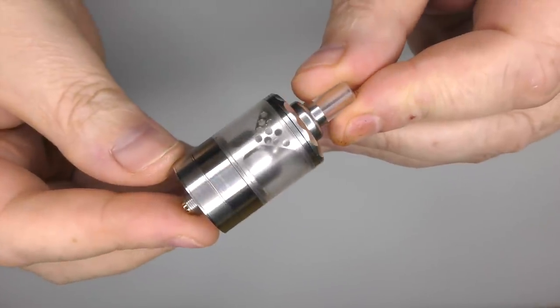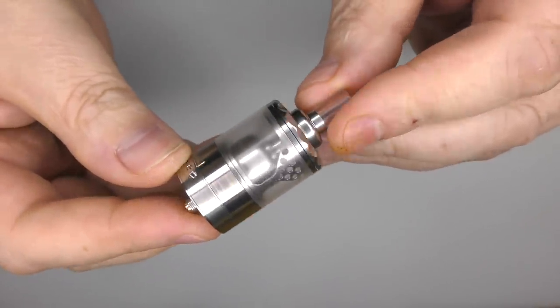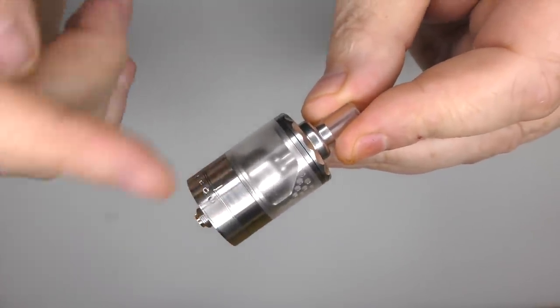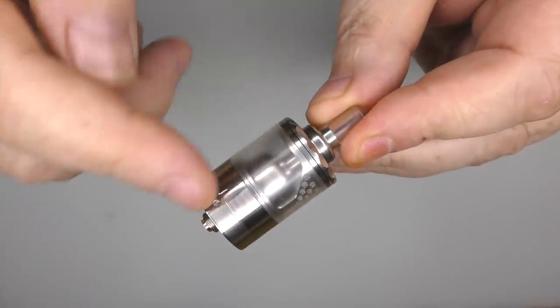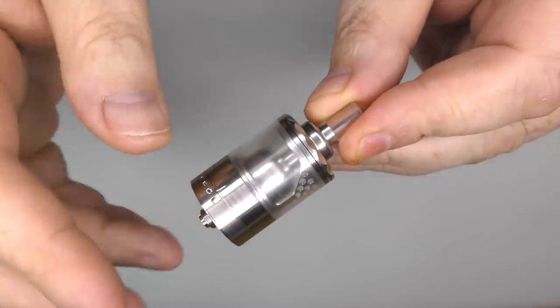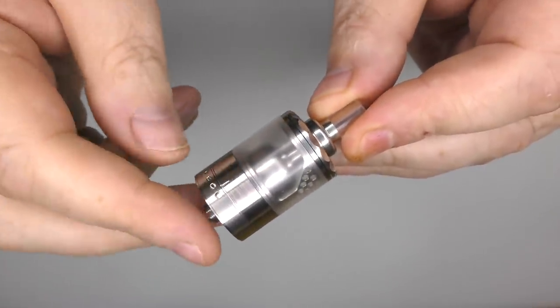Now, this is 24 millimeters in diameter. The height, not including the 510 or the drip tip, you're going to be looking about 34.6 millimeters.